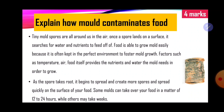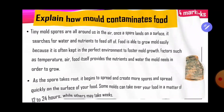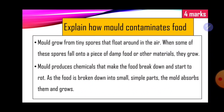In summary or simpler terms: how mold contaminates food — mold grows from tiny spores that float around in the air. When some of these spores fall onto a piece of damp food or other materials that are in ideal conditions, they will grow. Mold produces chemicals that make the food break down and start to rot. As the food is broken down into small simple parts, the mold absorbs them and grows. That is worth four marks.